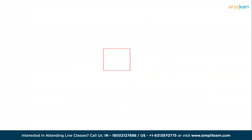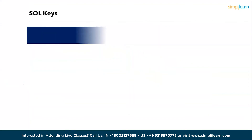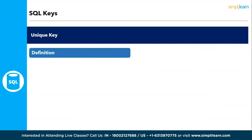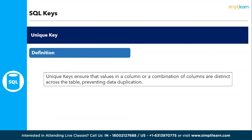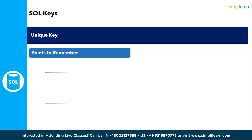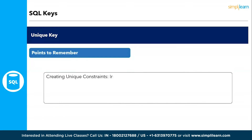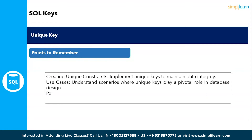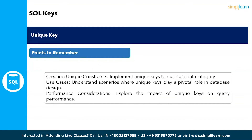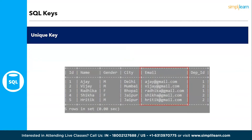The next type is the unique key. Unique keys ensure that the values in a column or combination of columns are distinct across the table, preventing data duplication. You can also consider a unique key as a primary key in some scenarios. Points to remember: creating unique constraints to maintain data integrity, use cases where unique keys play a pivotal role in database design, and performance considerations regarding the impact of unique keys on query performance.